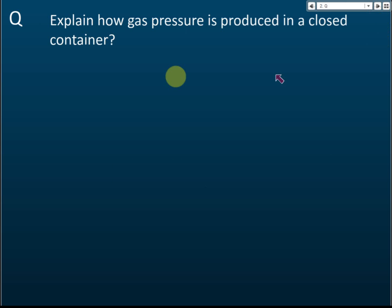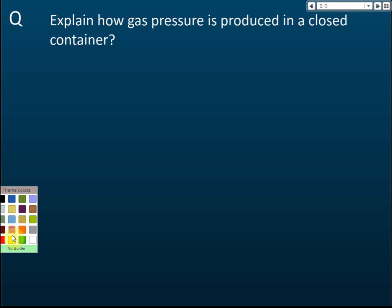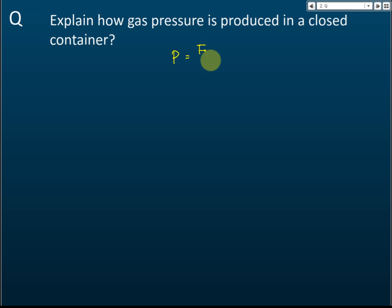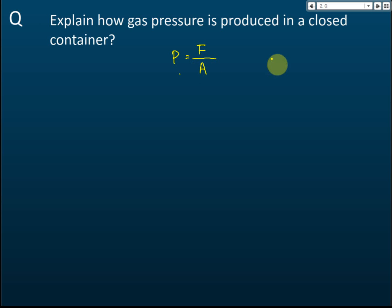The first topic is gas pressure — specifically, how gas pressure is produced in a closed container. Before this, we learned that pressure is how much force is applied on one unit of area, so pressure P equals force divided by area: P = F/A.